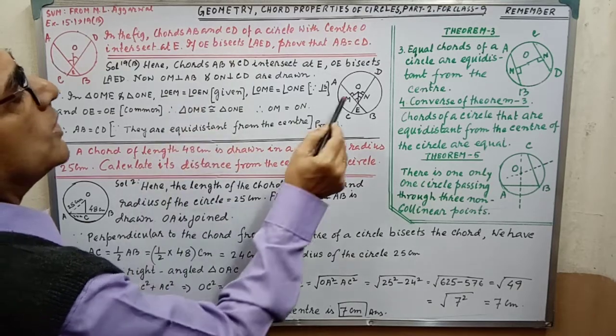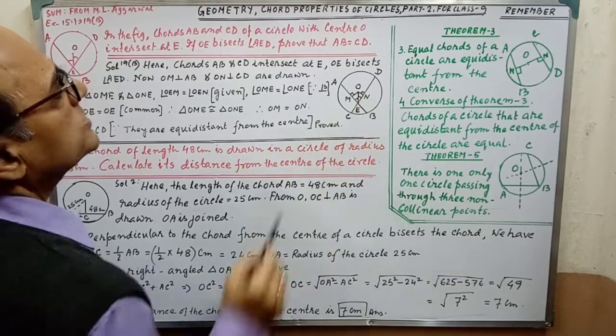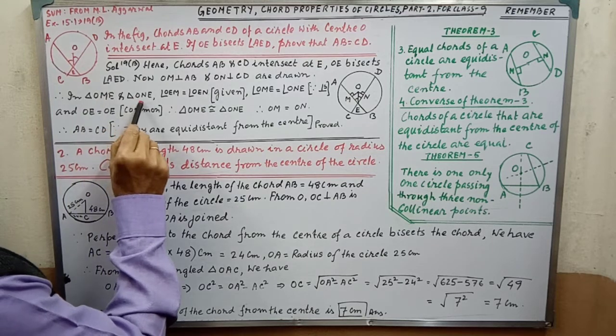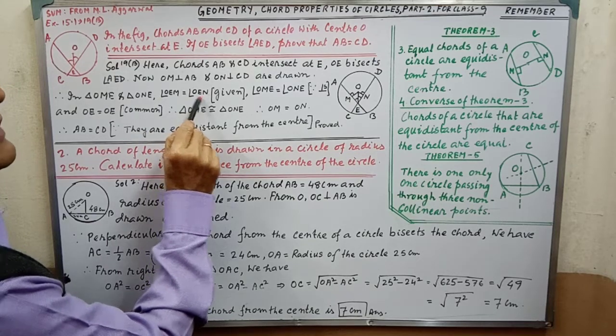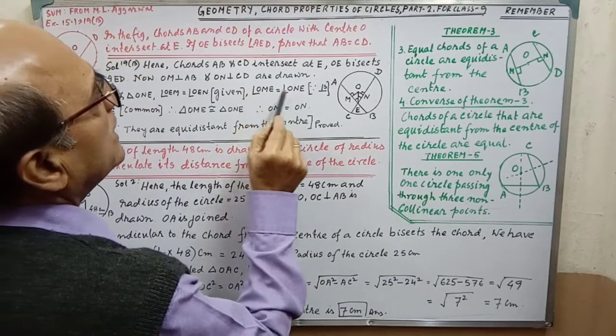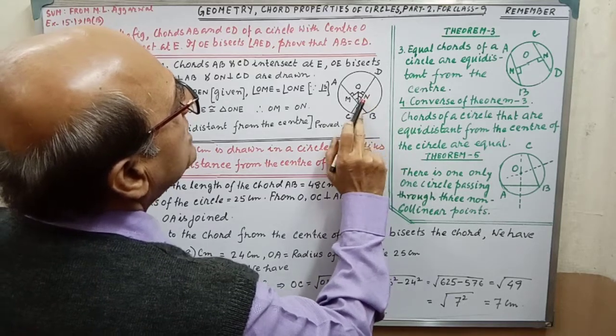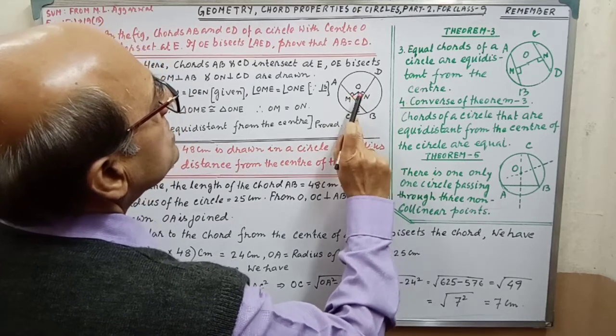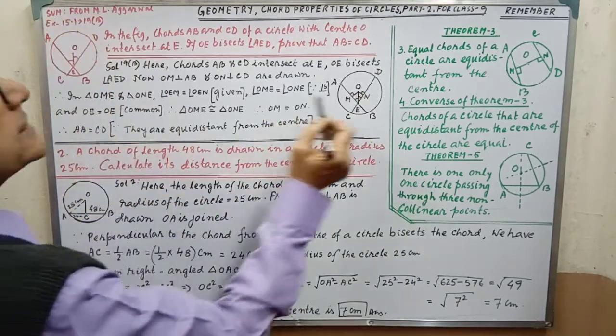Now, OM perpendicular to AB. OM perpendicular to AB and ON perpendicular to CD are drawn. Therefore, in triangle OME and triangle ONE, angle E equal to angle E. That is given. This angle equal to this angle. Since they are perpendicular to each other, this perpendicular, this angle 90 degree and this angle 90 degree. This is why angle M equal to angle N. And OE is the common.